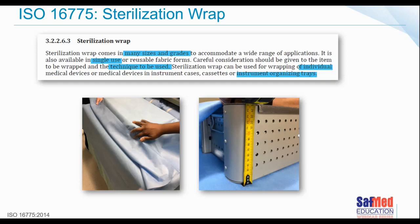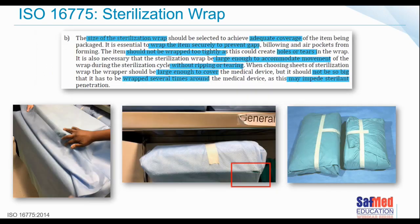Careful consideration should be given to the item to be wrapped and the technique to be used. Sterilization wrap can be used for wrapping individual medical devices or instruments in organizing trays. The size of the wrap should be selected to achieve adequate coverage of the item. It is essential to wrap the item securely to prevent gaps, billowing and air pockets from forming. The item should not be wrapped too tightly as this could cause holes or tears, but the wrap also must be large enough to accommodate movement during the sterilization cycle.